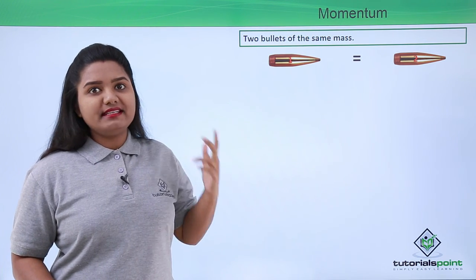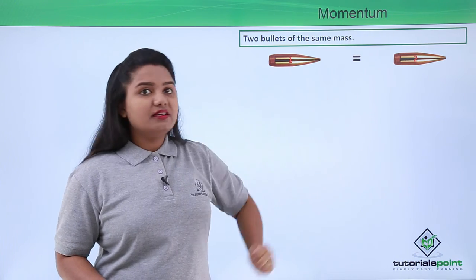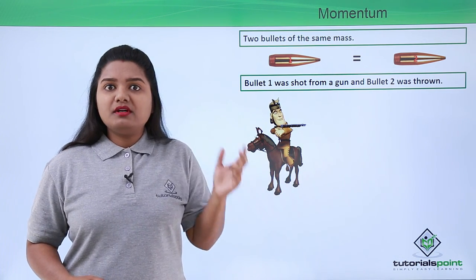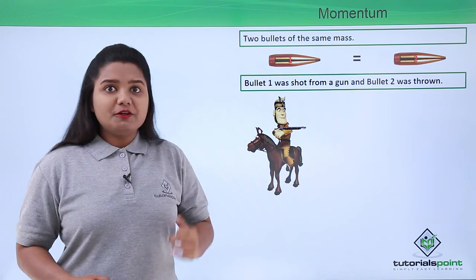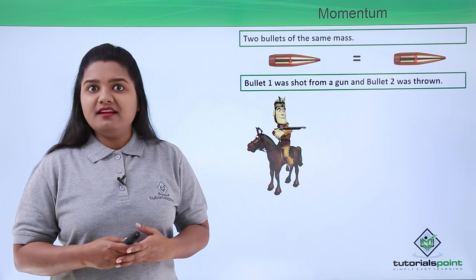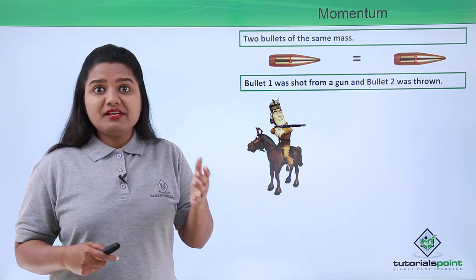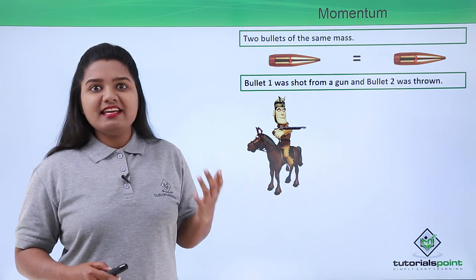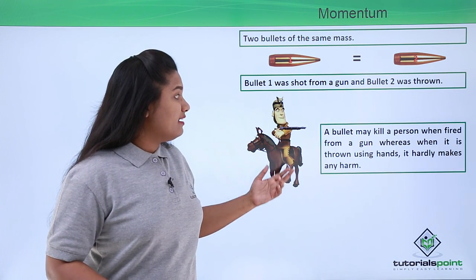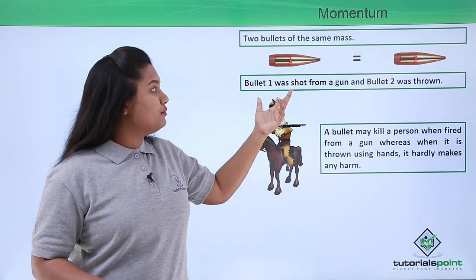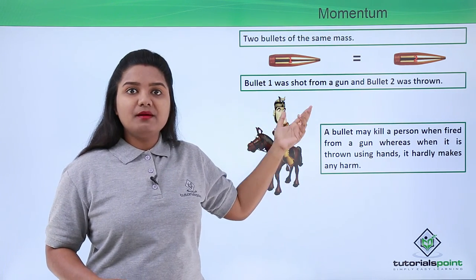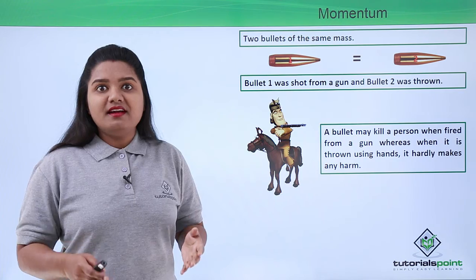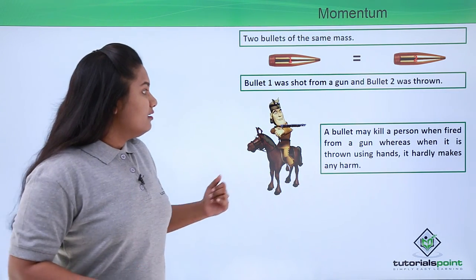Let's take another example with two bullets of the same mass — bullet number one and bullet number two. The first bullet is shot from a gun and the second bullet is simply thrown onto a wall by hand. The first bullet penetrates into the wall, but the second bullet which was thrown by hand hardly makes any impact on the wall. The first bullet may even kill a person.